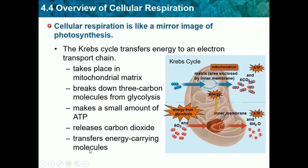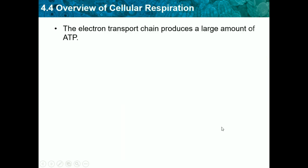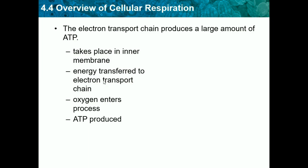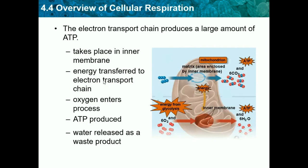The electron transport chain is the second part of our process and produces a large amount of ATP. It takes place in the inner membrane, and this is where oxygen enters the process — that's why we need to breathe to do cellular respiration. This step produces ATP and releases water as a waste product.